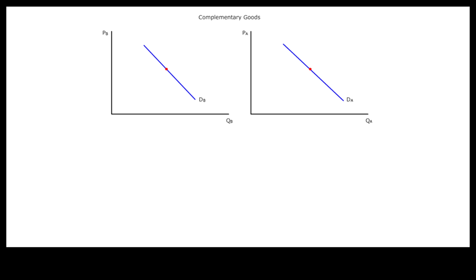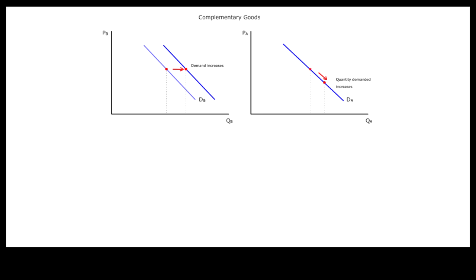Here we have the demand curves for two complementary goods A and B. Suppose the price of good A goes down on the right panel. The law of demand tells us that more of good A will be purchased by moving down the demand curve — in other words, the quantity demanded for good A will increase. Since goods A and B are complementary, more good A requires the use of more good B. But the price of good B has not changed, so more good B would be bought only if the demand for good B increases by shifting to the right.